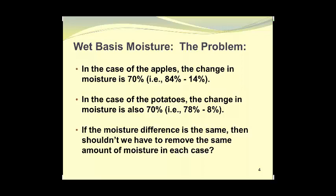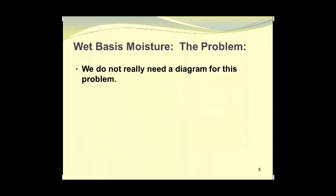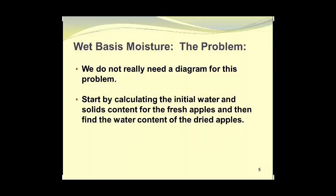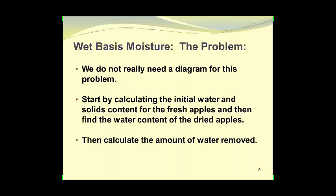If the moisture difference is the same, then shouldn't we have to remove the same amount of moisture in each case? We really don't need a diagram for this problem. We can start by calculating the initial water and solids content for the fresh apples and then find the water content of the dried apples. Once this is done, we can calculate the amount of water removed. Having done this, we will do similar calculations for the potatoes.